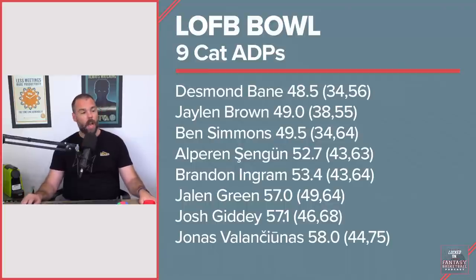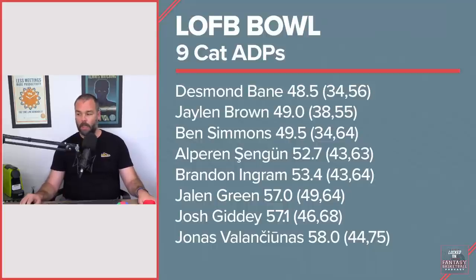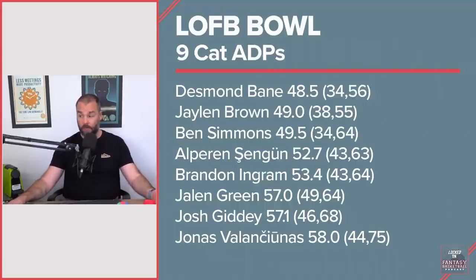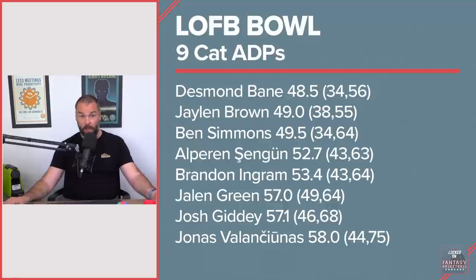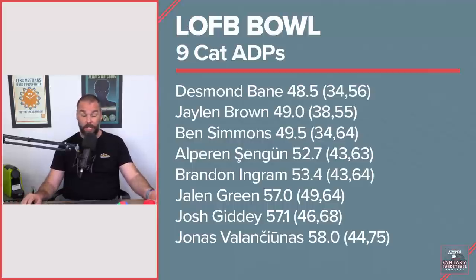I told you that Alperen Sengun is getting priced out. His ADP is at 52.7 — it's too high. I know it's hard to find centers, but it is too high. Highest of 43 and lowest of 63. I love Sengun; I think he can be a really good player. But watch that he doesn't get priced out — I have some concerns with fouls, usage, and efficiency. If you want to reach a little bit early because you need a big, but that average of 53 is so high.